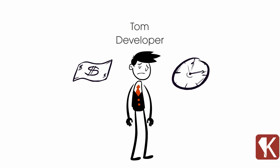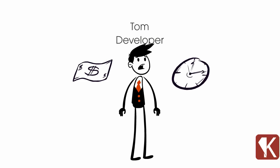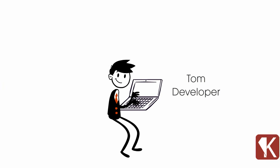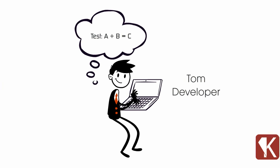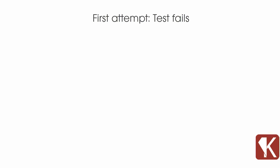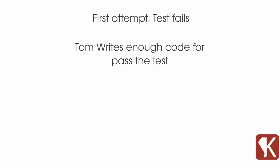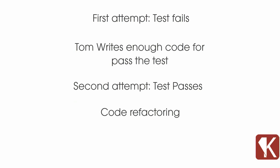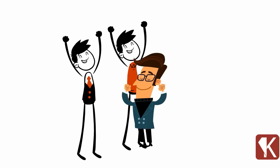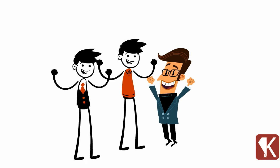What would have happened if Tom's team had used good practices like TDD? Well, first, Tom, instead of writing the code for the functionality, would start by writing a test. In the first attempt, the test fails. Then Tom writes enough code to make the test pass. In the second attempt, the test passes. Then Tom refactors his code, and runs all the tests again to ensure the new functionality does not break anything in the application. Then Tom and his team can keep going and develop new functionalities. They are saving money and time.